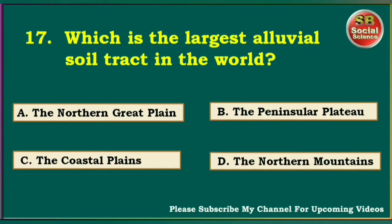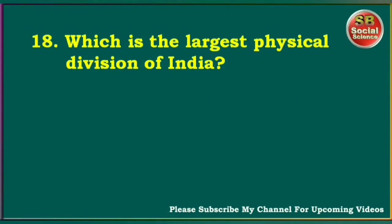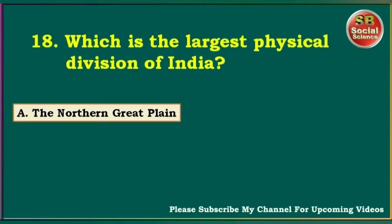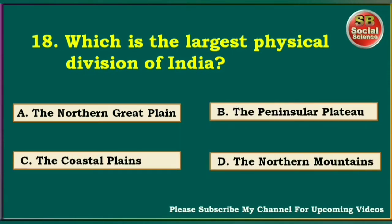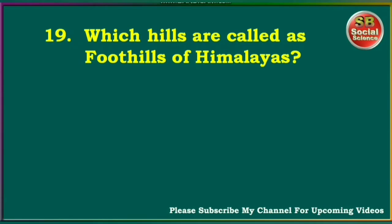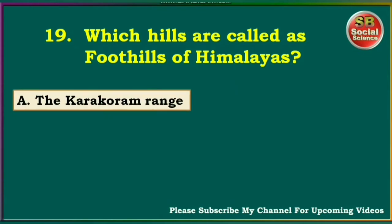Which is the largest physical division of India? The Northern Great Plain, the Peninsular Plateau, the Coastal Plains, the Northern Mountains. The answer is the Peninsular Plateau. Which is called the Foothills of Himalayas? The Karakoram Range, Aravali Range, the Vindhyas Range, the Shivalik Hills. The answer is the Shivalik Hills.